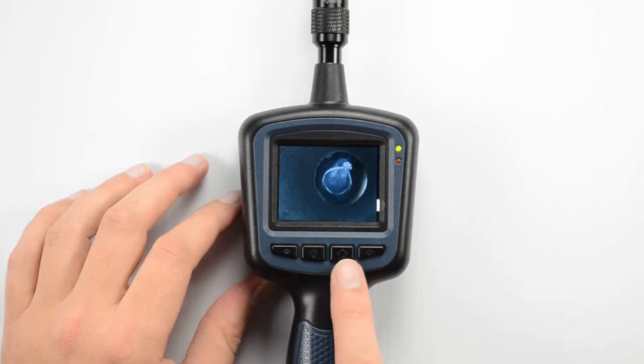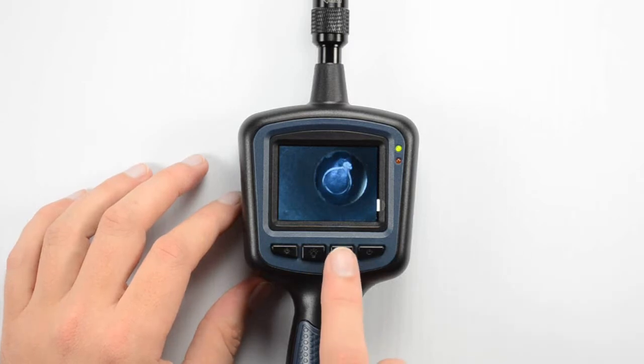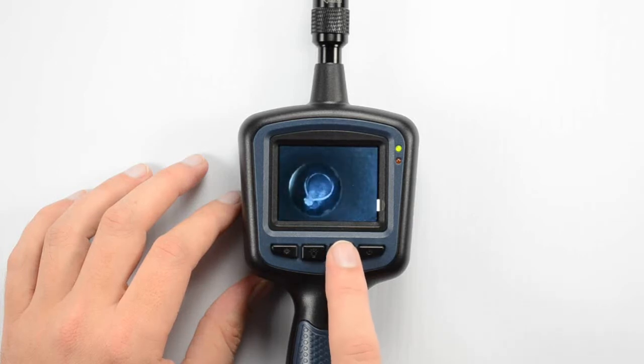And then the next button here that we've got is our image rotation and image flipping. Each time we press this it's going to flip and rotate that image so we get a different orientation depending on how we're looking at our monitor.